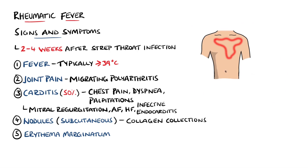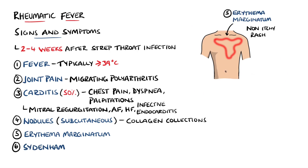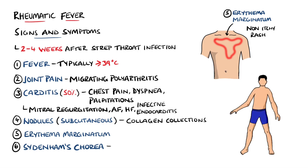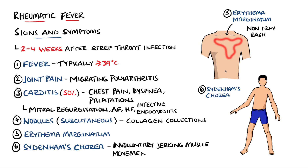There may also be a non-itchy rash known as erythema marginatum, which appears with a red margin and a clear center. Sydenham's chorea — meaning uncoordinated, involuntary, jerky muscle movements — is a possible finding. It is found mostly on the face, but can be seen in all four limbs.